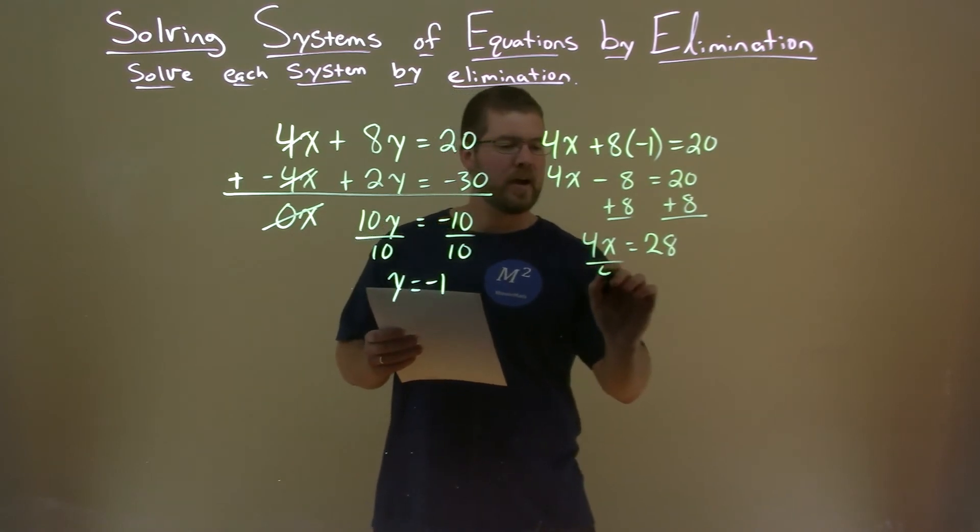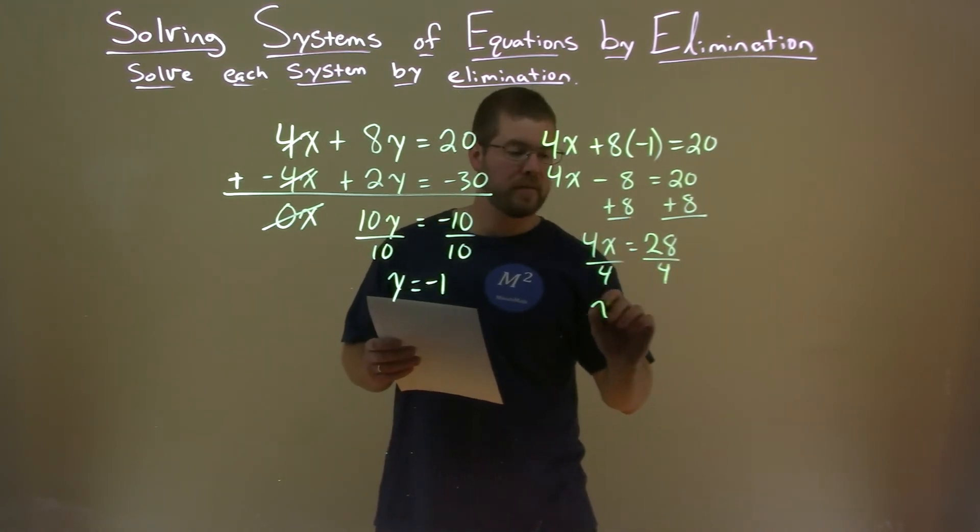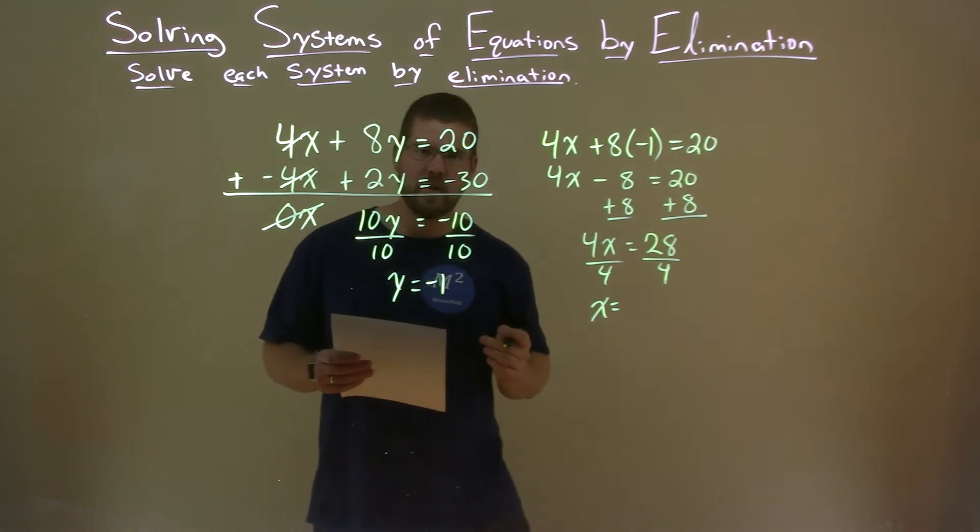From there, we divide both sides by 4, and we're left with x by itself, and 28 divided by 4 is 7.